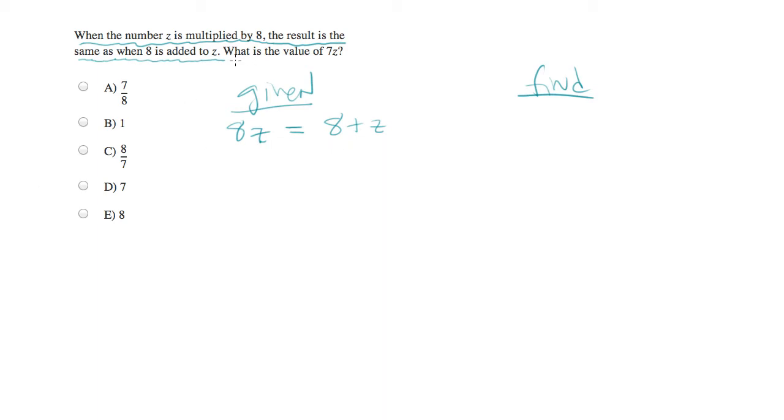Then they ask us to find the value of 7z, so we're hunting for that. Now you'll see here that you can save yourself a bunch of steps if you identify what you're hunting for, because watch what happens when we start to simplify this.